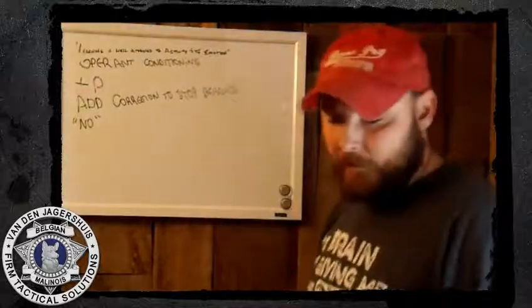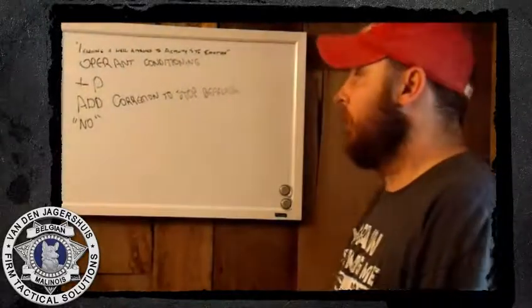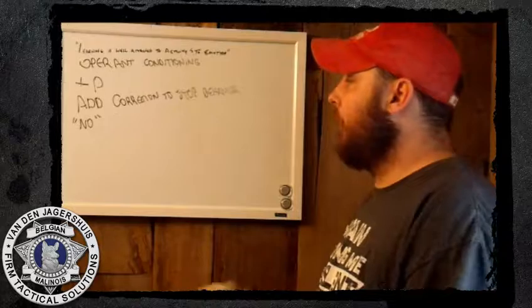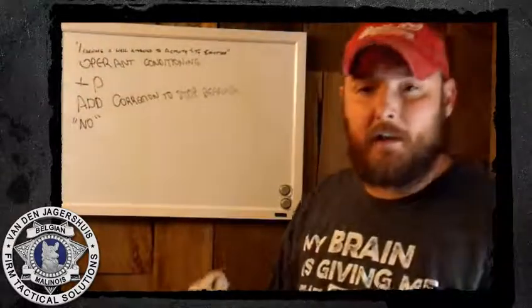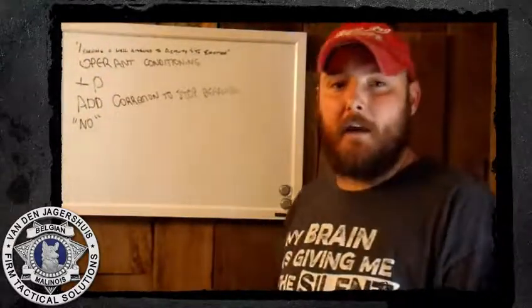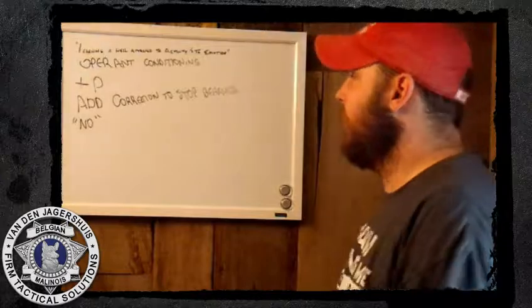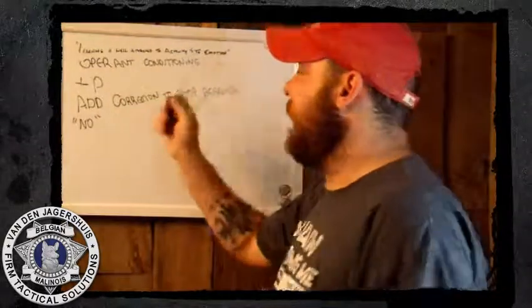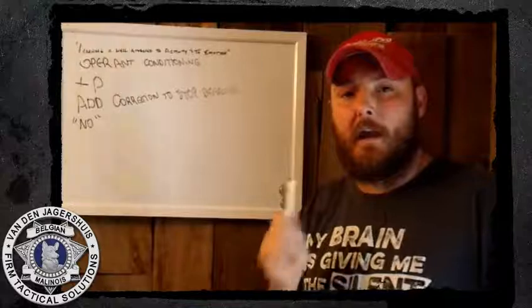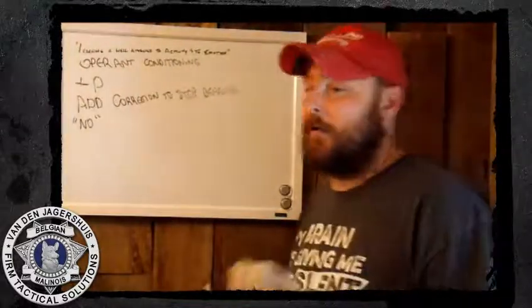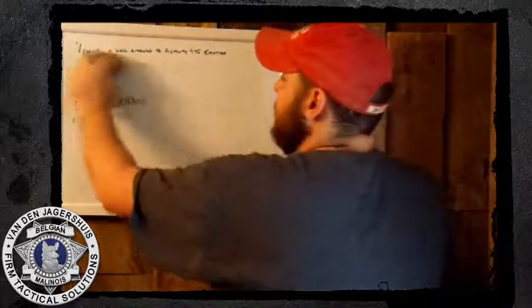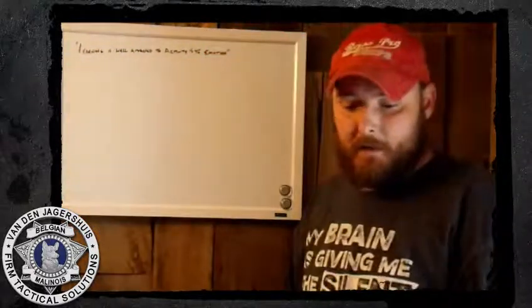Those are the four quadrants of operant conditioning. I'm going to talk more about each one as the videos go along and explain what is positive, what's negative, what's reinforcement, what's punishment. It's very important that you understand what each quadrant represents so that future discussions make sense. Go ahead and finish writing that down, take whatever notes you need, and then we're going to talk about the Premack Principle next.